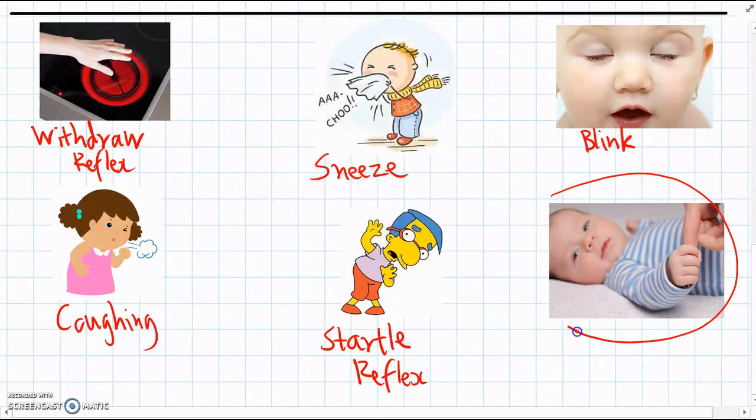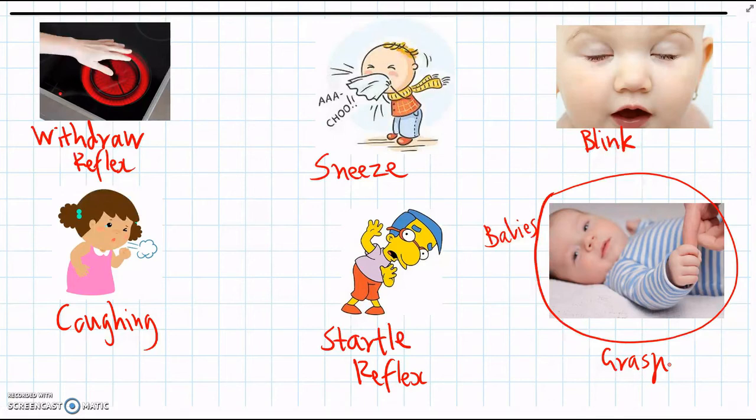The last reflex only happens in babies or infants, and then we grow out of it as we become adults. It's called the grasp reflex. If you've ever tried this with a baby, if you put your finger or another object and brush it on the palm of their hand, they without even thinking grab and hold on to that object or your finger really tightly. Scientists think that human babies have evolved this reflex so they can grab onto their mother as they're being carried around.